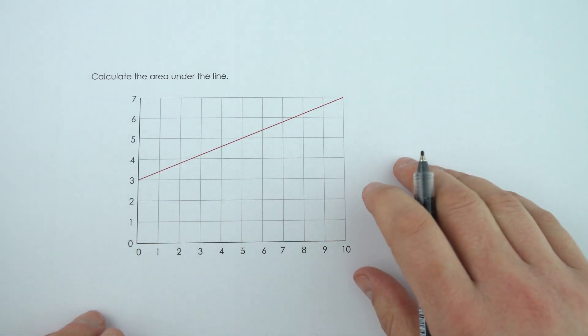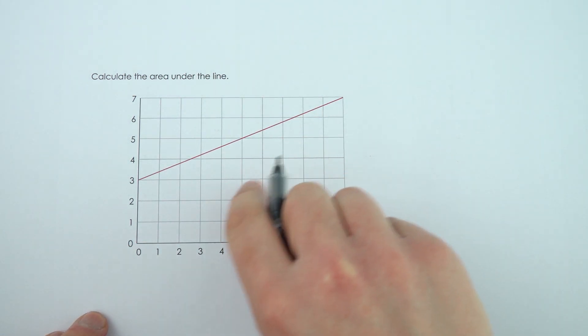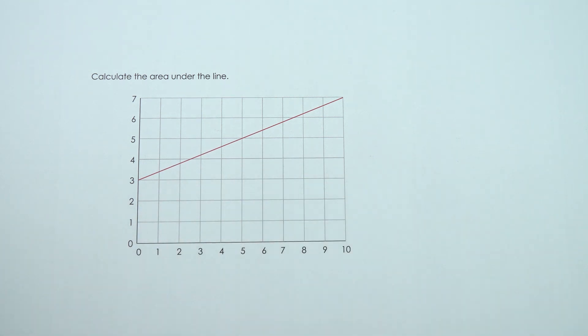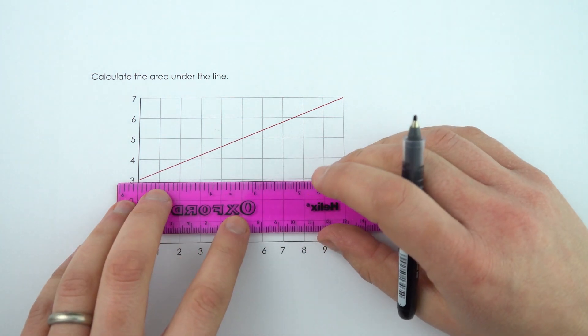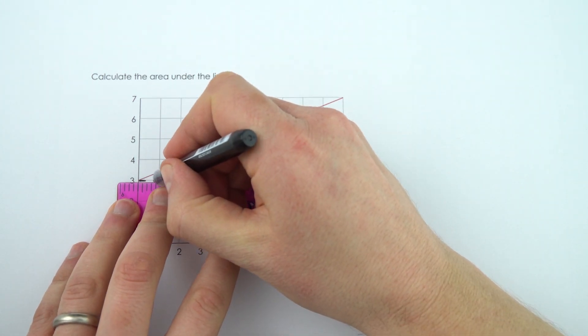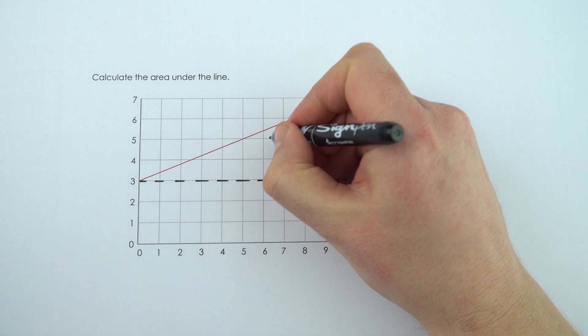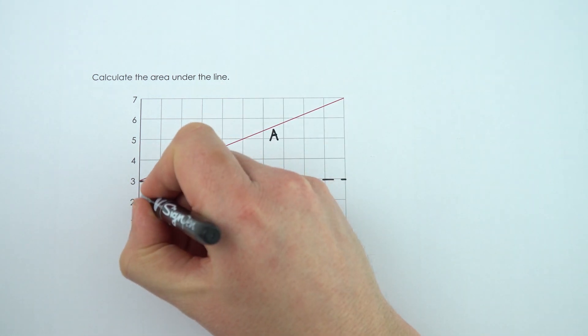Now in physics, the areas that we need to calculate tend not to be just simple triangles. We might have an area like this. But again, we can just split this down into two smaller shapes. So what we have in the top part is a triangle and a rectangle down here. So let's call that area A and that area B.